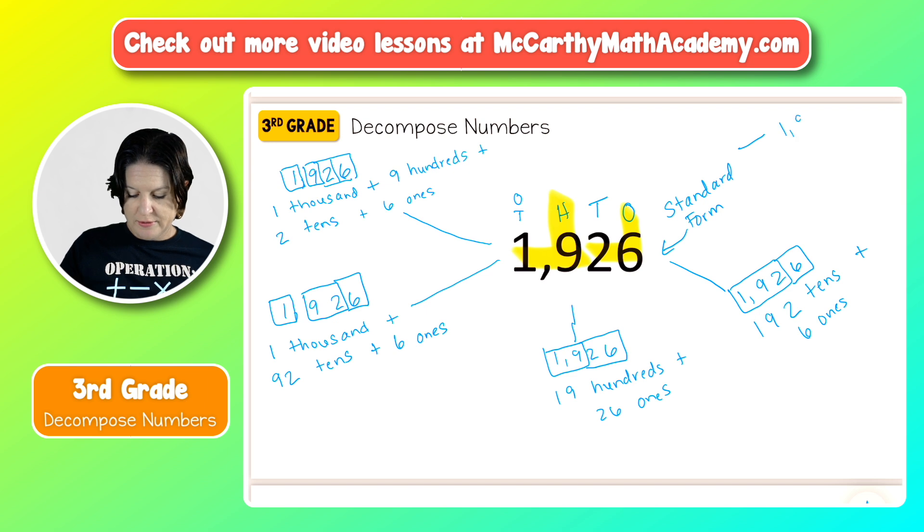One final way that we could do it would be to consider the entire thing. This actually isn't the final combination of what we can do. I just only have room for one more example there. And that would be 1,926 ones would be another way to decompose it. That's a lot of ones.